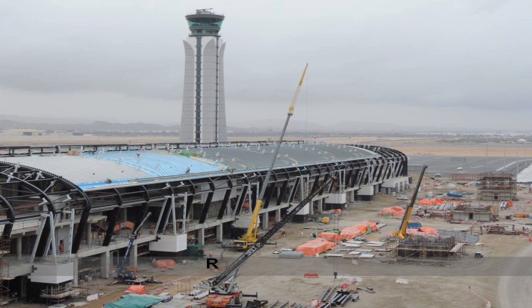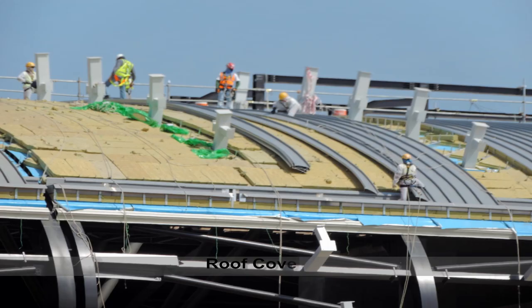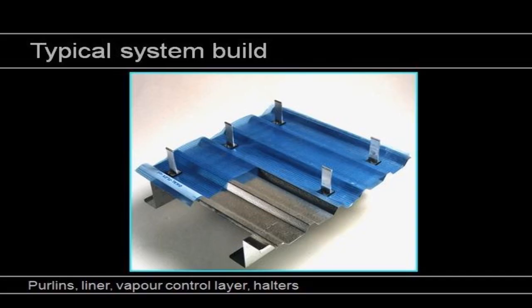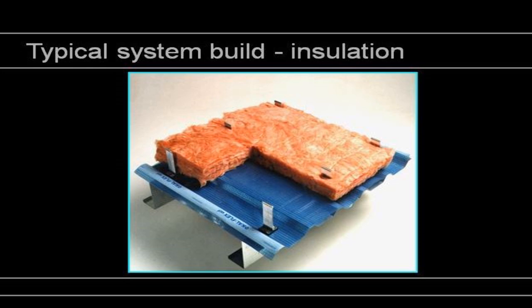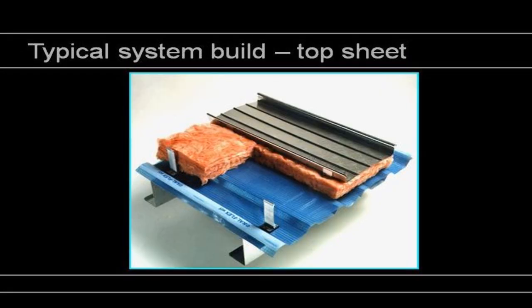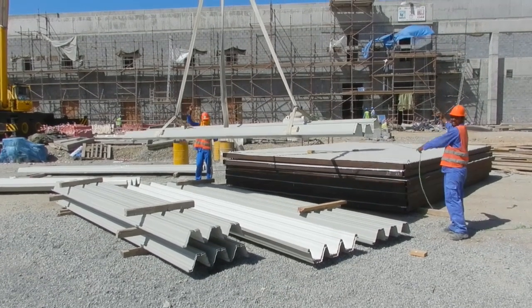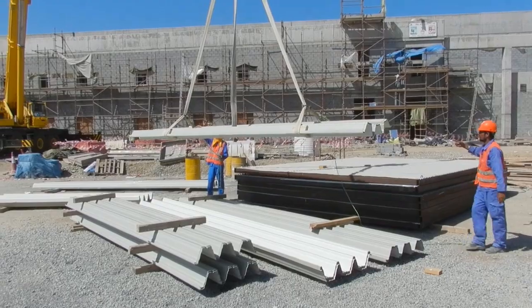Roof covering. Shown are the methods to construct the roof covering, which is made up of deck sheets, vapor barrier, top hat sections, fixing clips, insulation, and a top sheet with standing seams that is rolled on site. The standing seams are clamped. Shown are the construction activities.